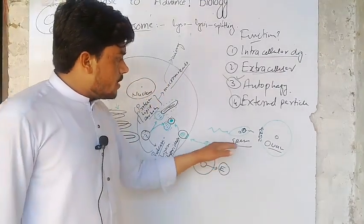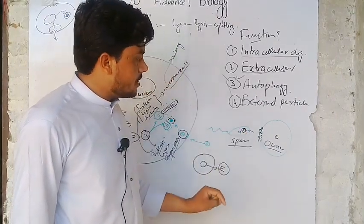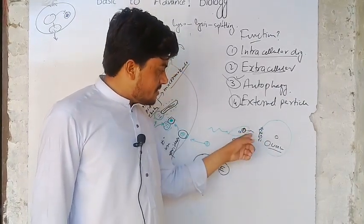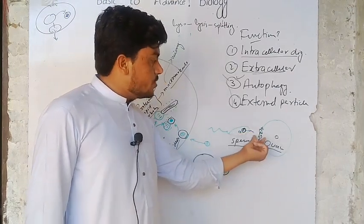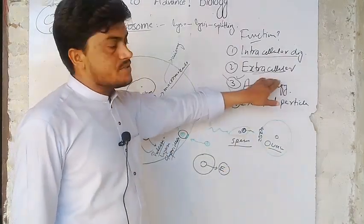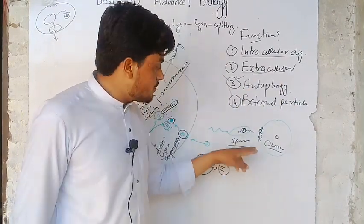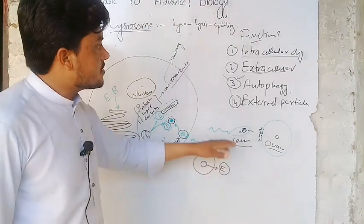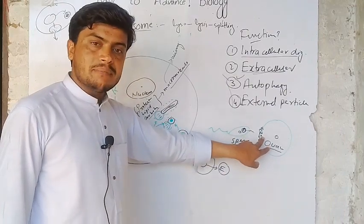For example, a sperm cell consists of a lysosome — right here the lysosome is present. When it is going nearer to the ovum, it releases its enzymes. The lysosome releases its enzymes in order to dissolve the outer membrane of the ovum. Both are different cells, and the sperm cell releases enzymes to the ovum cell outside of the cell. This is called extracellular digestion — digesting a membrane outside of the cell.